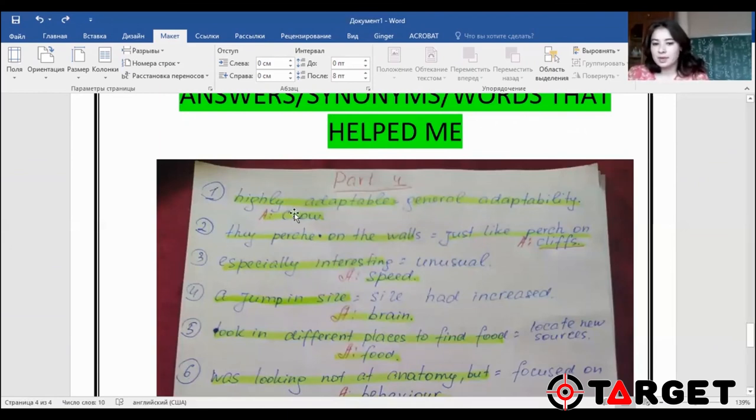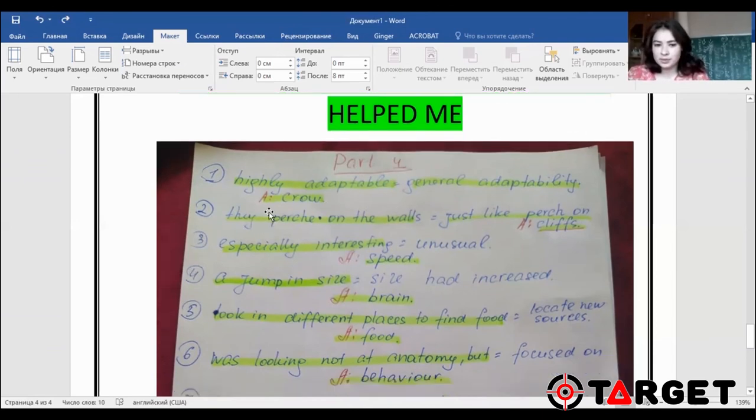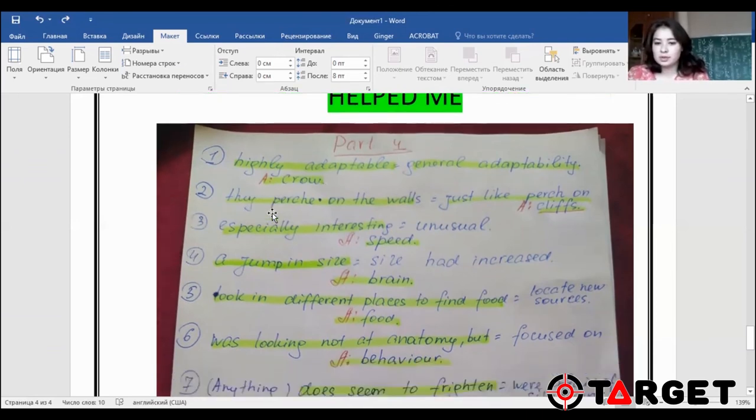Number one, highly adaptable. And in the question, it was general adaptability. This is paraphrased version and the answer will be crow. The crow are highly adaptable or they show general adaptability. Question number two, they perch on the walls, just like they perch on cliffs. And by the way, the synonym for the word just like was similar to. Just like, this is the paraphrase. And the answer will be cliffs. They perch on the walls, just like they perch on the cliffs.